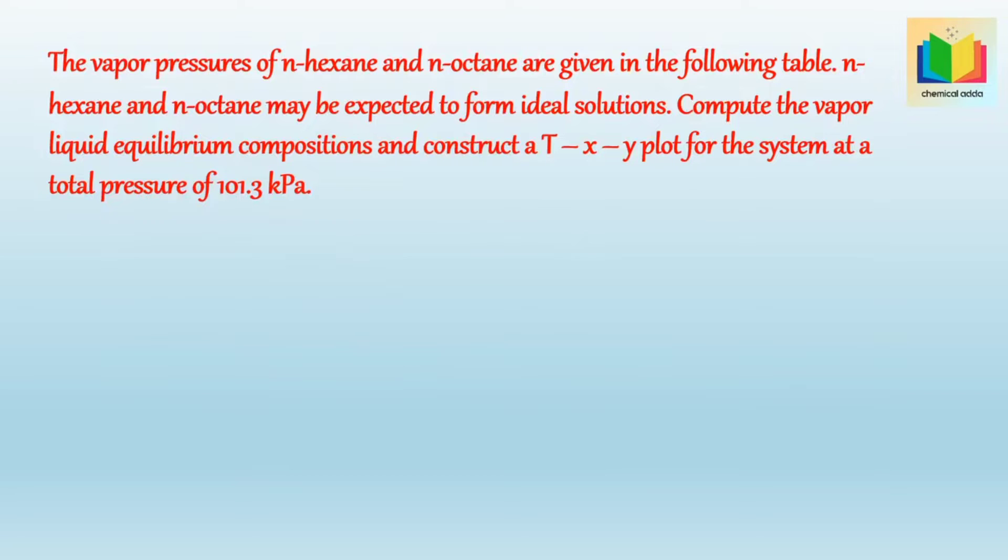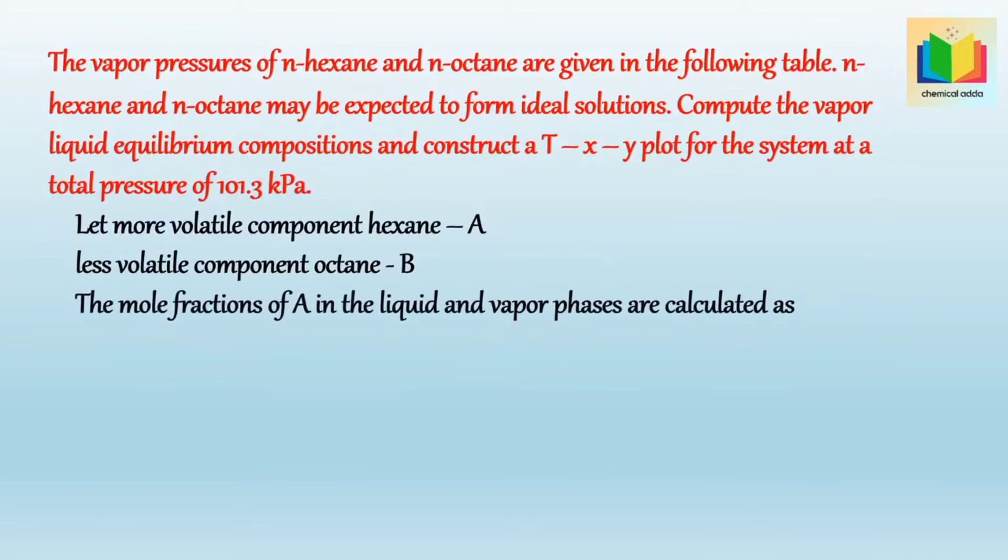So let more volatile component N-hexane be A and less volatile component N-octane be B. By using Dalton's law and Raoult's law, we get an equation for the mole fraction of component A, that is hexane, in liquid and vapor phase as: X is equal to P minus PB0 divided by PA0 minus PB0, and Y is equal to PA0 into XA divided by P.